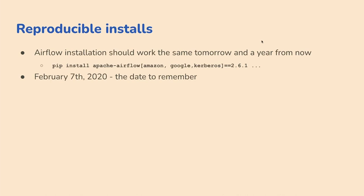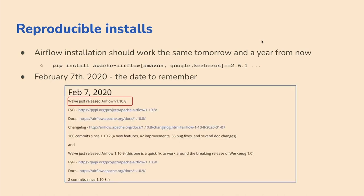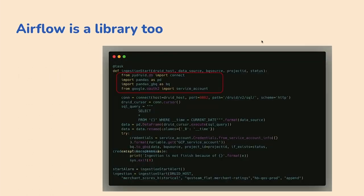Remember the date February 7, 2020 — that's when we released Airflow 2.0. The same day, not two weeks later but literally an hour after we released Airflow, somebody released Verx — one of our dependencies — and it broke the co-installation. Users trying to install it just couldn't. That is unacceptable because you have no control over it.